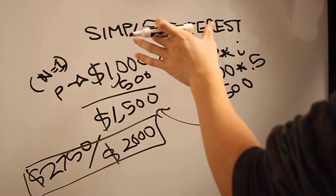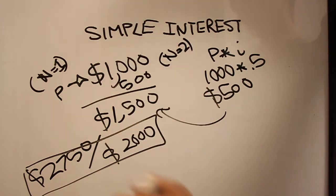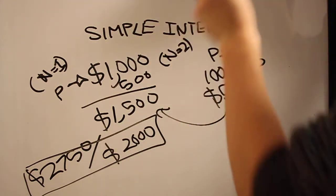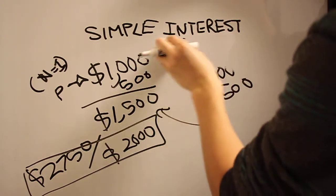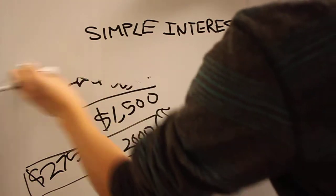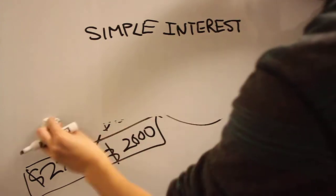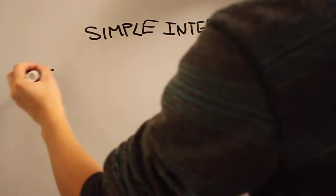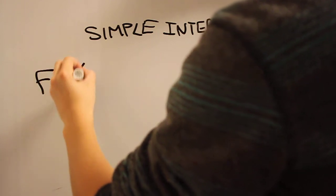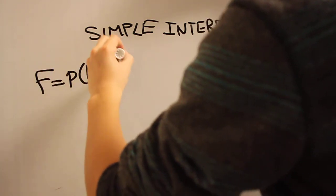Obviously, you can think of simple interest as in the interest, no pun intended, of the bank, not you. So let's derive a formula here, which differs from the compound interest formula, which I'll write down again. F equals P times 1 plus i to the nth power. So that's compounded.